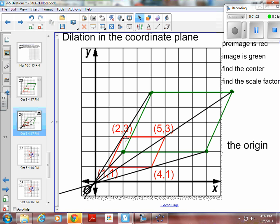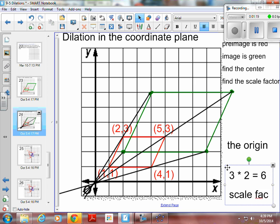Well, this original segment here is 1, 2, 3 in the red preimage. And the green one is 1, 2, 3, 4, 5, 6. So you had to multiply 3 times 2 to equal 6. So the scale factor is 2.